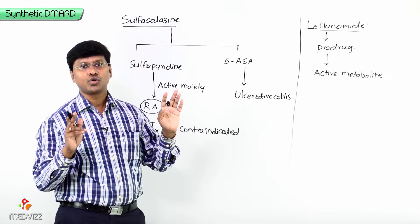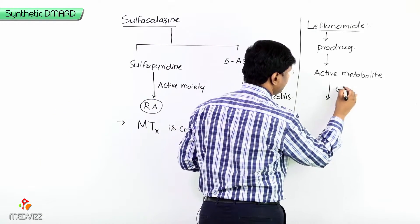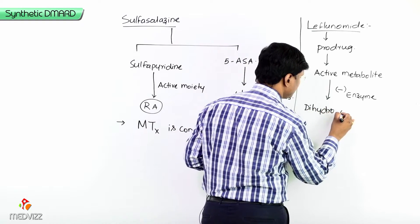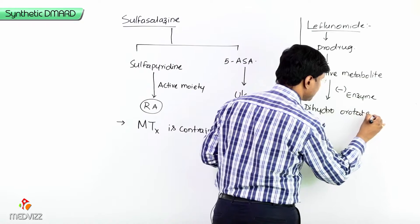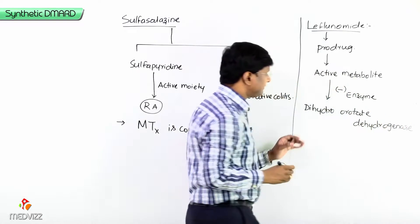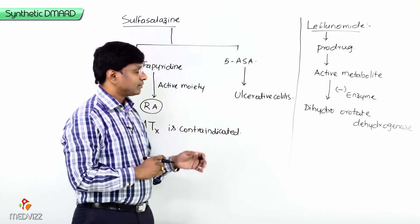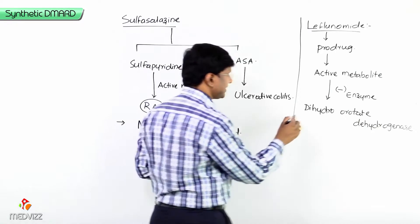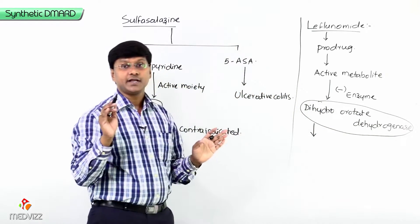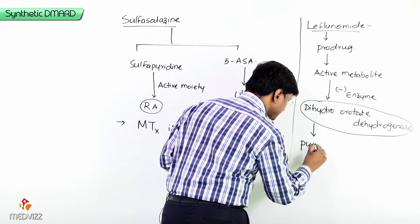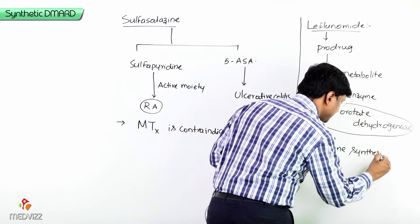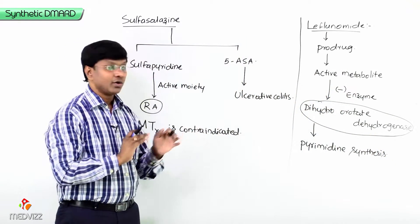The active metabolite of leflunomide inhibits the enzyme dihydroorotate dehydrogenase. This is a very important enzyme for pyrimidine synthesis.